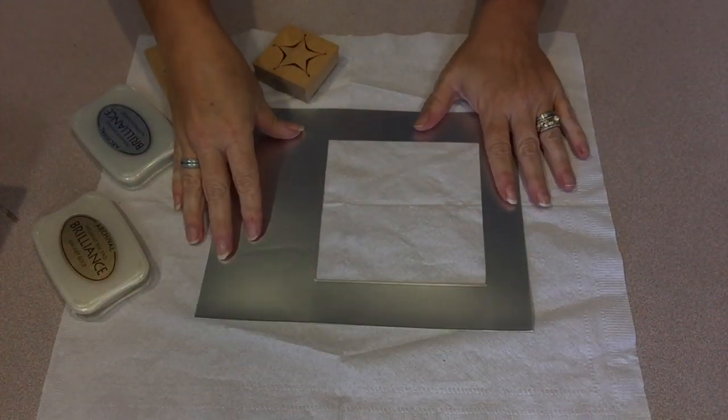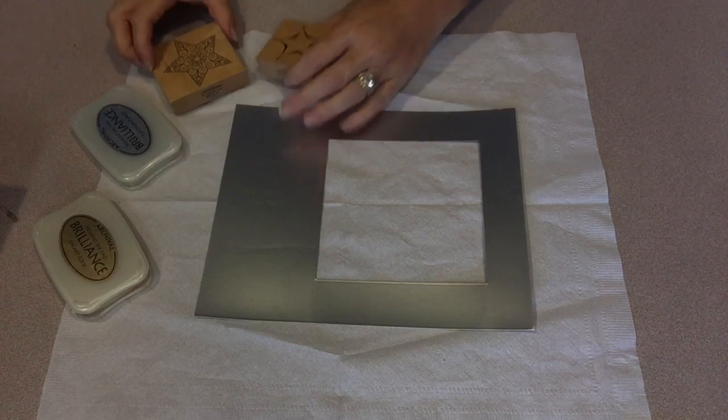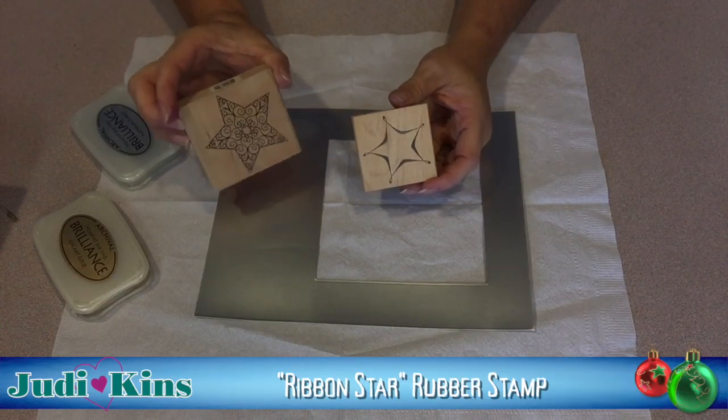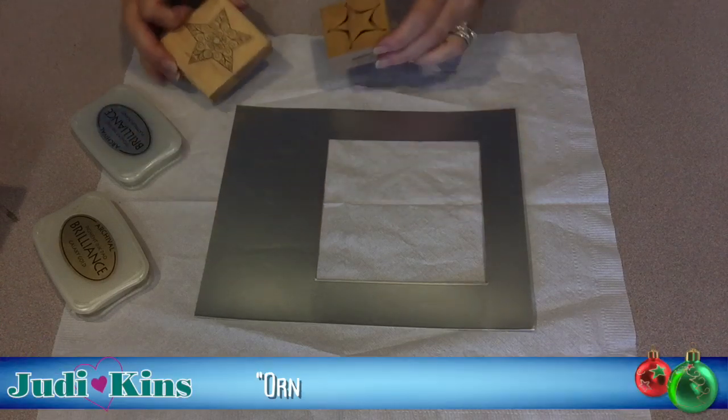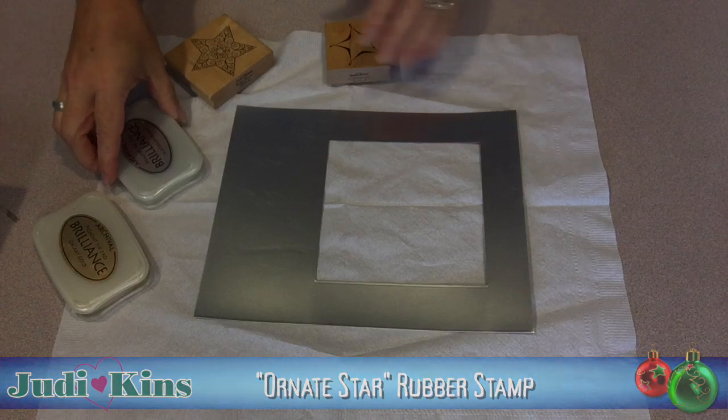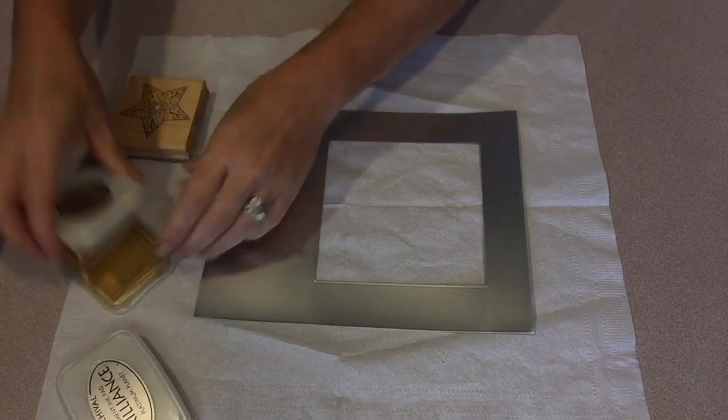The first layer of details for the mat is going to be rubber stamping. I'm using two beautiful star stamps from Judykins, her Ribbon Star and Ornate Star. And I'm going to use a gold and a silver metallic ink pad to stamp them.